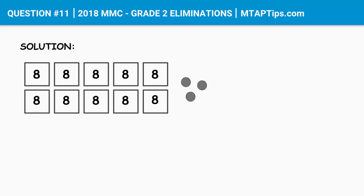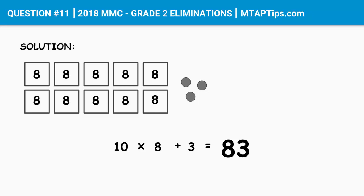To know that, first we'll have to multiply the number of boxes by the number of cookies that was put into it. We have 10 small boxes and there are 8 cookies in each box. So we multiply 10 by 8 and add 3 for the leftover. So 10 times 8 plus 3 — the answer is 83. The mother baked 83 cookies.